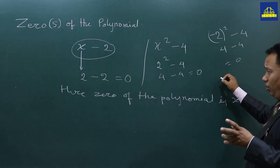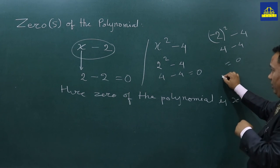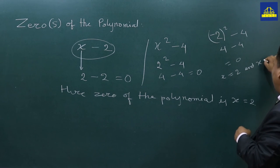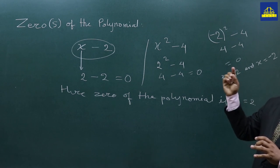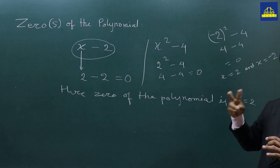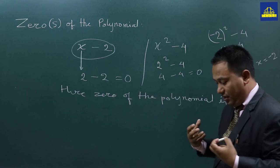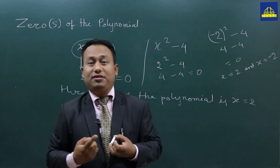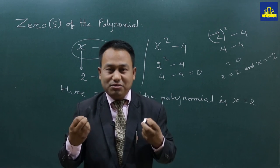So the zeros of the polynomial are plural. x equals to minus two, and x equals to minus two. At the zero of the polynomial, you can see the number of the polynomial. So we have zero of the polynomial.